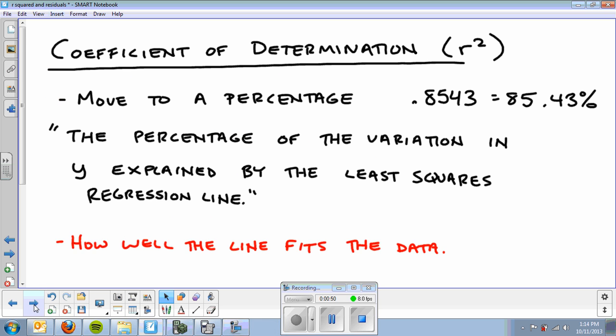The coefficient of determination, or r squared. You've seen this and I told you not to worry about it yet. You're going to get r squared, which is literally the correlation squared. You'll move it to a percentage, like 0.8543 becomes 85.43%. It accounts for the percentage of the variation in y explained by the least squared regression line. It's more or less how well the line fits the data. High values of r squared, high percentages, mean reliable models. Low values mean they're not as reliable.